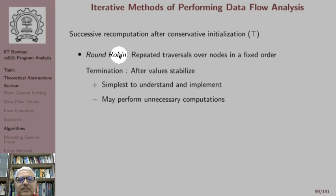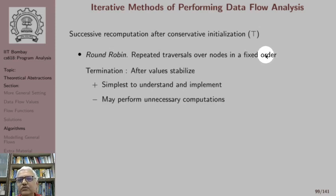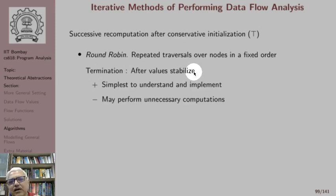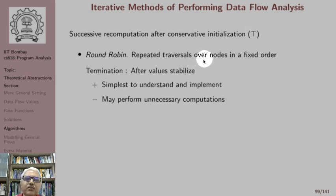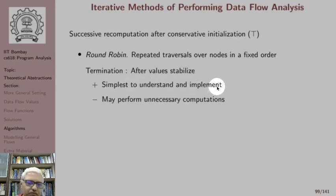The round robin algorithm performs repeated traversals over nodes of the control flow graph in a fixed order. After traversal i and traversal i+1, when we find that all values at all nodes in the control flow graph are identical, we say we have computed a fixed point of the data flow equations. Because we start with the top value, we have computed the maximum fixed point solution. The benefit of this method is it is simplest to understand and implement.